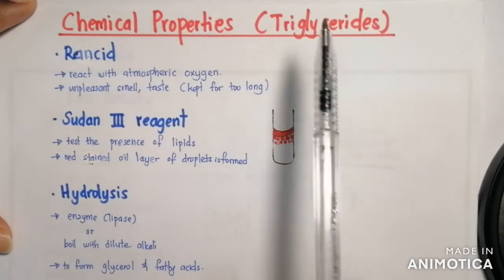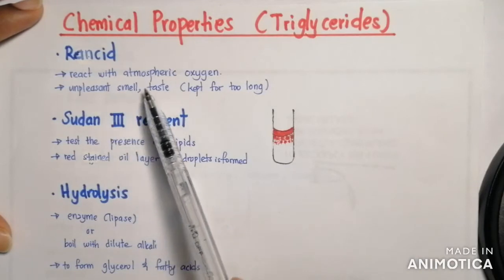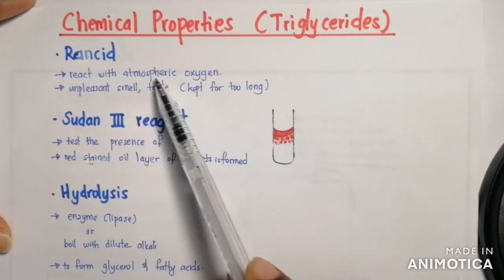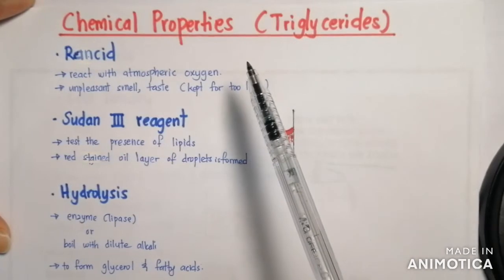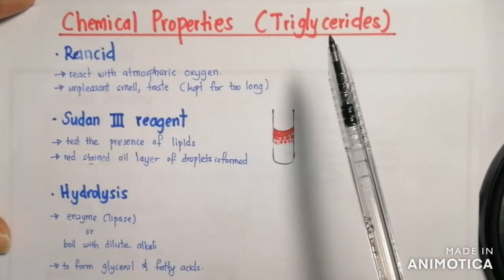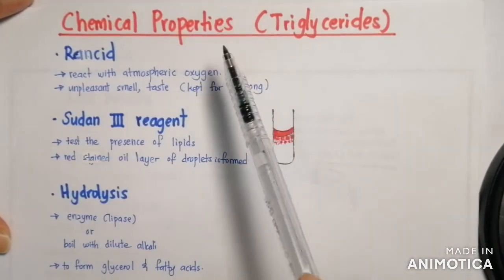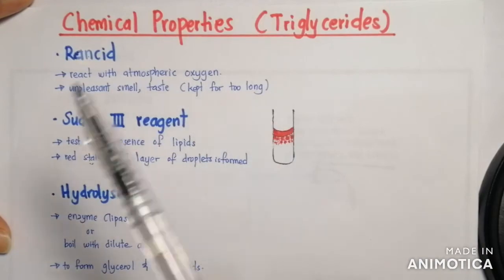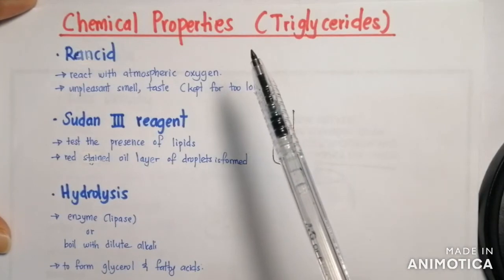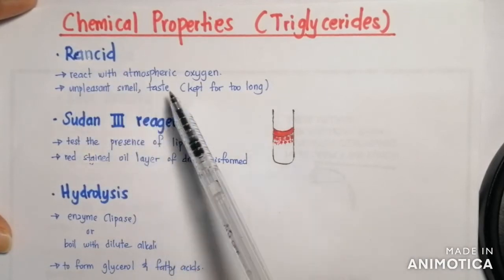The chemical properties of triglycerides: they become rancid, meaning they give out an unpleasant smell or taste if kept too long exposed to air. This is because they react with atmospheric oxygen. For example, if you leave french fries open without a lid, they will be exposed to atmospheric oxygen and undergo oxidation, becoming rancid with an unpleasant smell or taste.